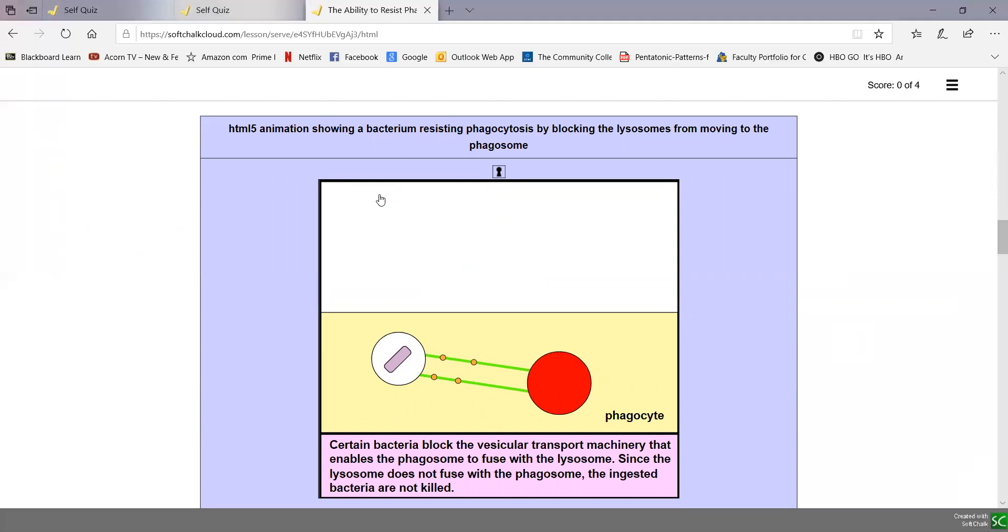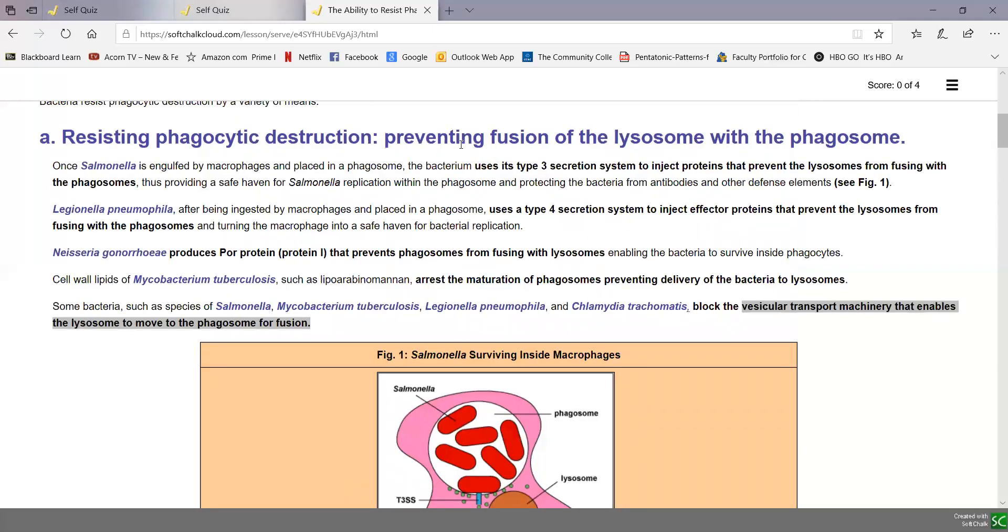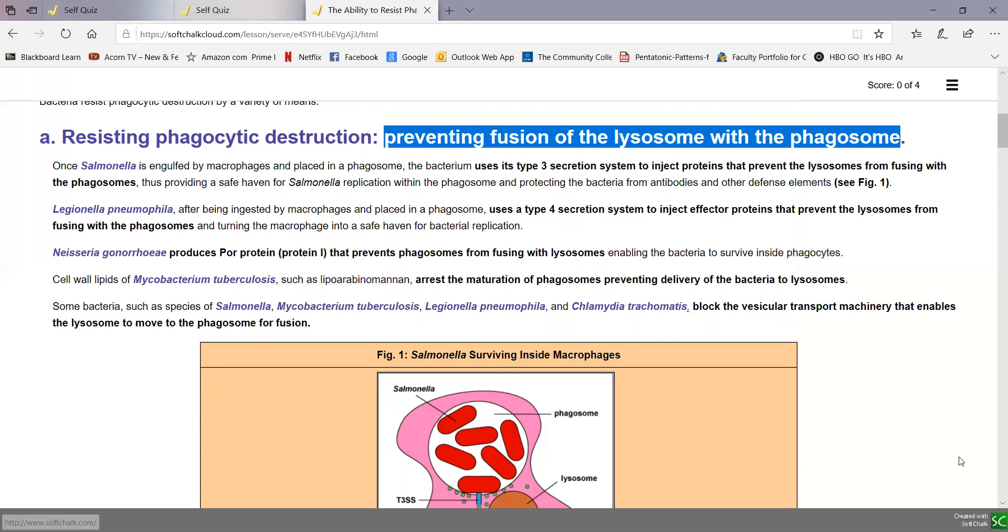Sometimes they produce molecules that interfere with the transport machinery within the cell that allows the lysosome to get to the phagosome to fuse. If the lysosome never fuses with the phagosome, the bacteria have a safe haven for replication. That's one way bacteria can resist destruction, preventing the fusion of the lysosome with the phagosome.